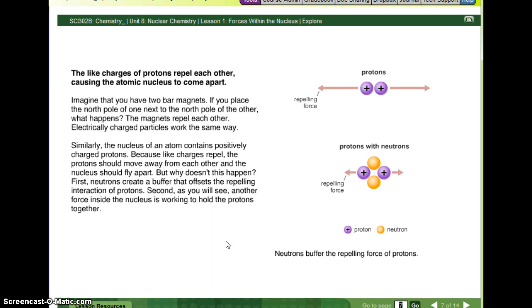The like charges of protons repel each other, causing the atomic nucleus to come apart. Imagine that you have two bar magnets. If you place the north pole of one next to the north pole of the other, what happens? The magnets repel each other. Electrically charged particles work the same way. Similarly, the nucleus of an atom contains positively charged protons. Because like charges repel, the protons should move away from each other, and the nucleus should fly apart. So, that's what our first picture is saying. Two positives don't want to be together. They should fly apart. But why doesn't this happen?